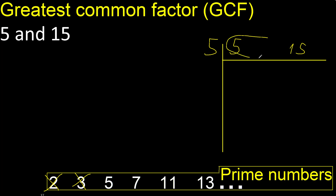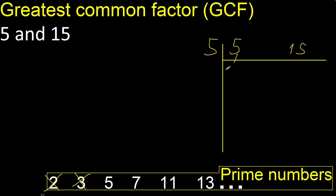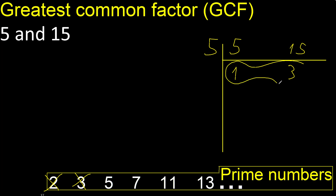Yes, because 5 and 15 can be divided by 5. 5 divided by 5 is 1, and 15 divided by 5 is 3. Finish, because 1 and 3 cannot be divided by the same number.